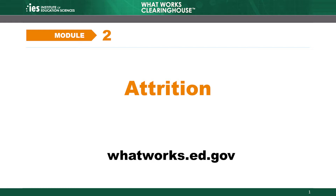On the slides, some words are underlined and in bold. Definitions for these terms are in the glossary, which is available on the WWC website, whatworks.ed.gov. To receive a certificate of completion for viewing these training modules, you must view the videos on the WWC website. Please view the introduction video before viewing this module, as it reviews important background information about this training and describes accompanying resources. You can access all the resources mentioned in this module through the WWC website, whatworks.ed.gov.